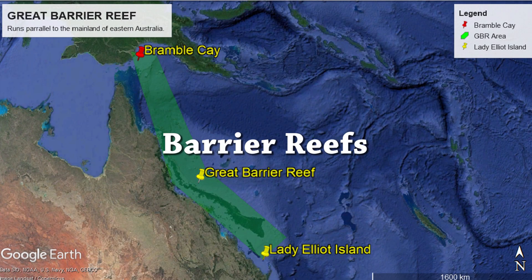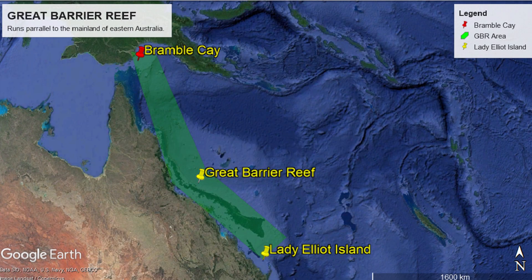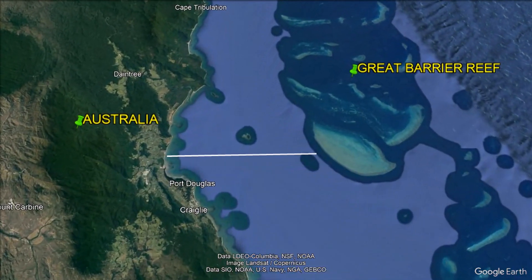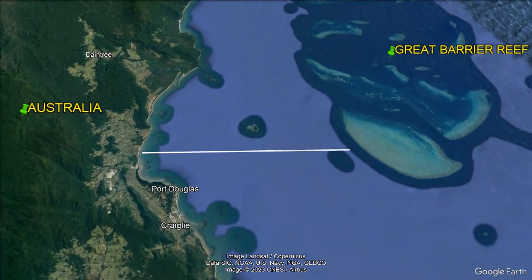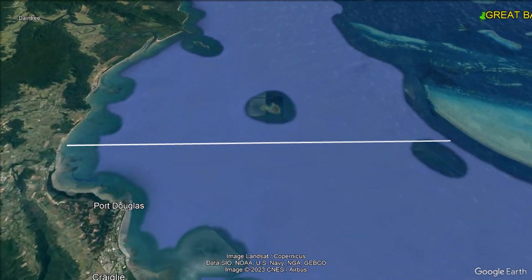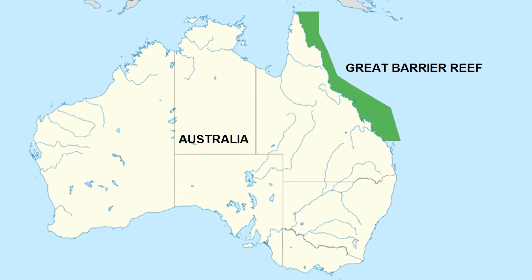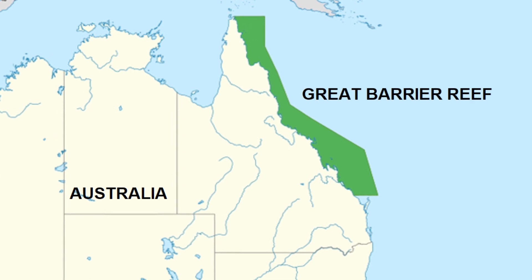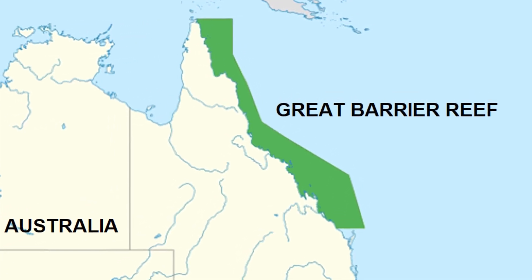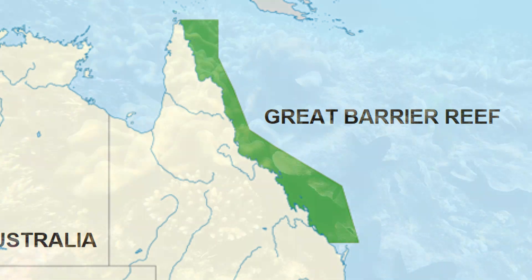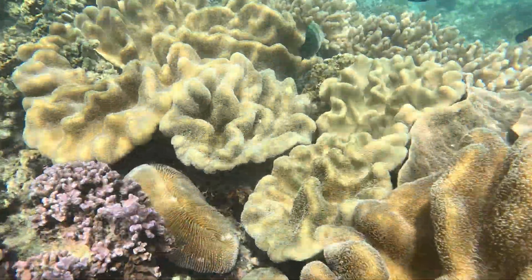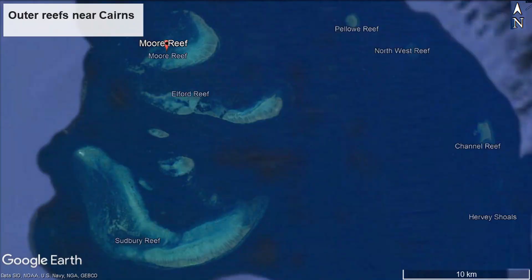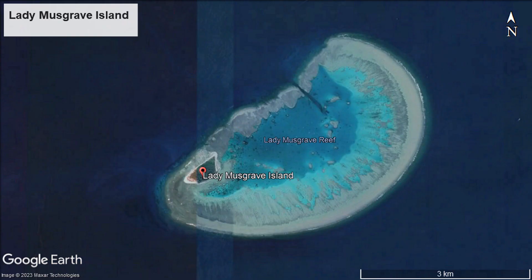Barrier reefs also run parallel to the shoreline, except they form offshore and are separated from the land by an expanse of water between the reef and the shore, forming a barrier between the land and the open sea. Australia's Great Barrier Reef is the world's largest coral reef system with a total area of approximately 344,000 square kilometers. It is not actually one single feature — it is composed of 2,900 individual reefs and over 900 offshore islands.